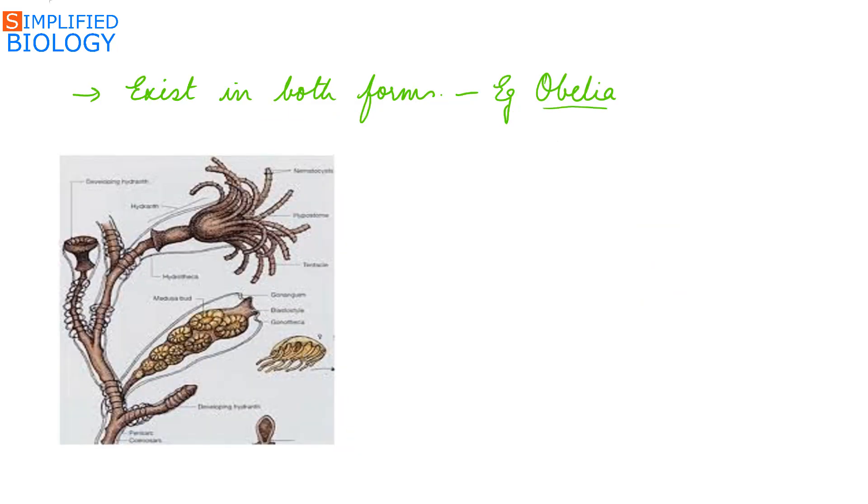In some cnidarians like Obelia, both the forms exist - both the polyp and the medusa are seen. They exhibit alternation of generation, this is known as metagenesis.